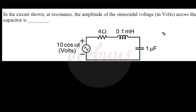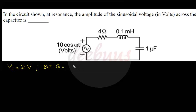Moving to the first question: in the circuit shown, at resonance the amplitude of the sinusoidal voltage across the capacitor is what? This circuit is basically a series RLC circuit under resonance. At resonance, capacitor voltage is Q times the applied voltage, where Q is the quality factor for a series RLC circuit given by (1/R) × √(L/C).